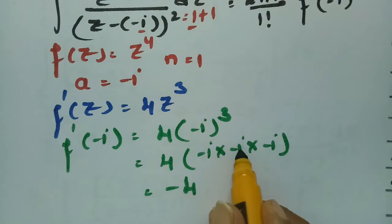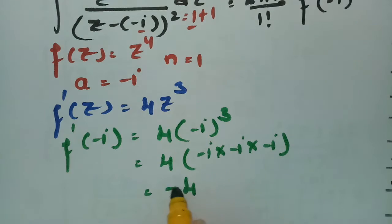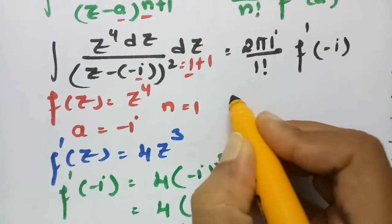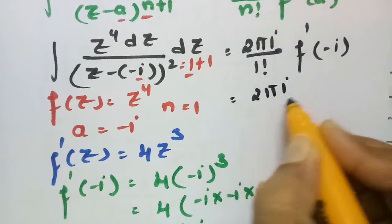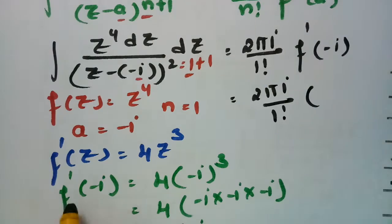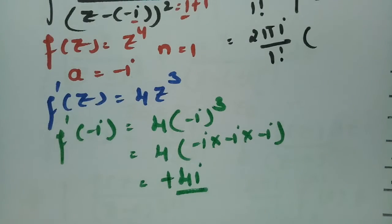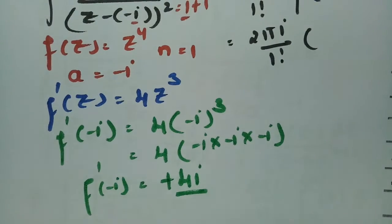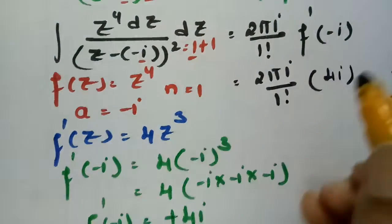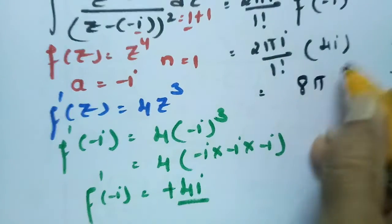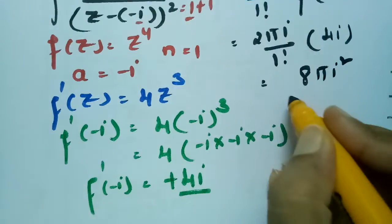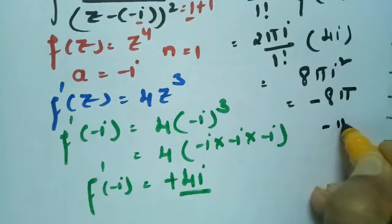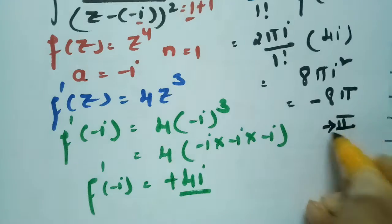So the second integral = 2πi / 1 · 4i = 8πi². Since i² = −1, this gives −8π. So the second integral value is −8π.